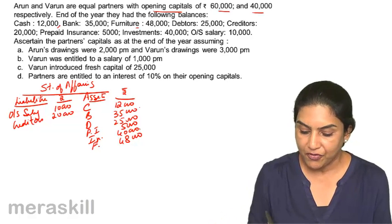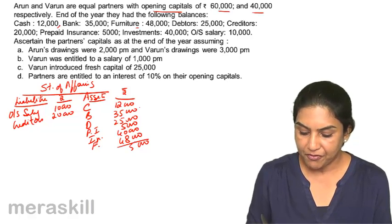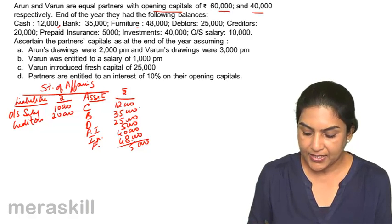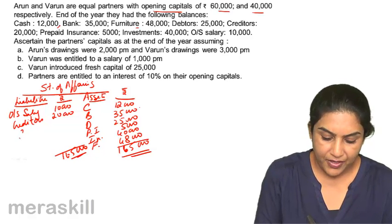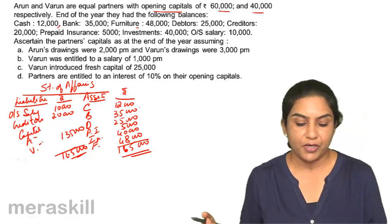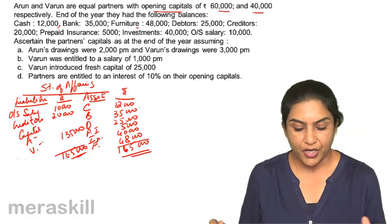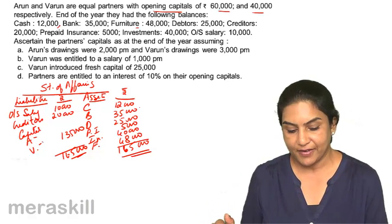Therefore, the total assets come to 1,65,000. The balancing figure — capital — is 1,35,000. The only thing is, I don't know how much is for Arun and how much is for Varun. But I do know that the closing capital is 1,35,000.